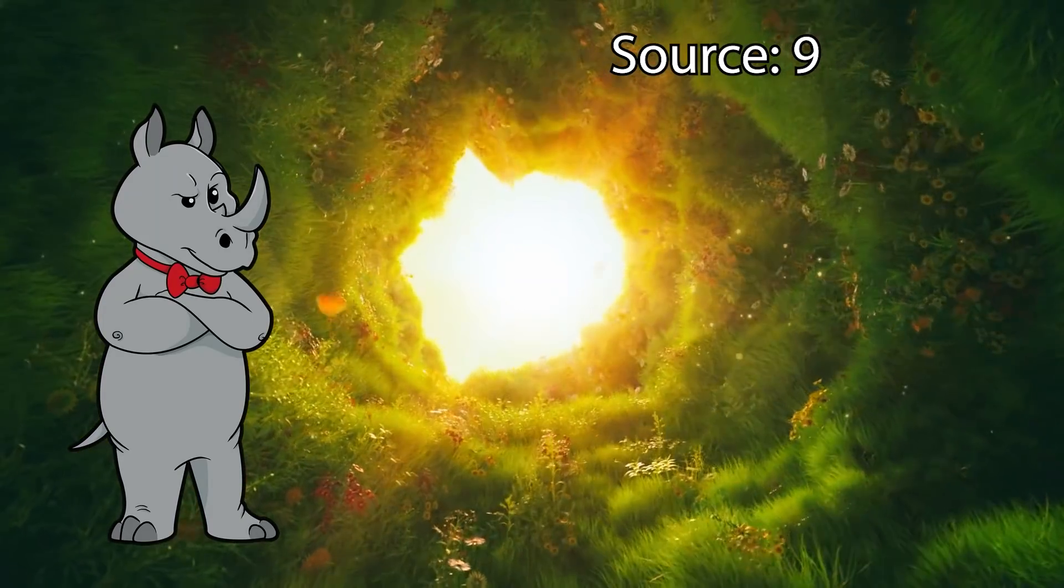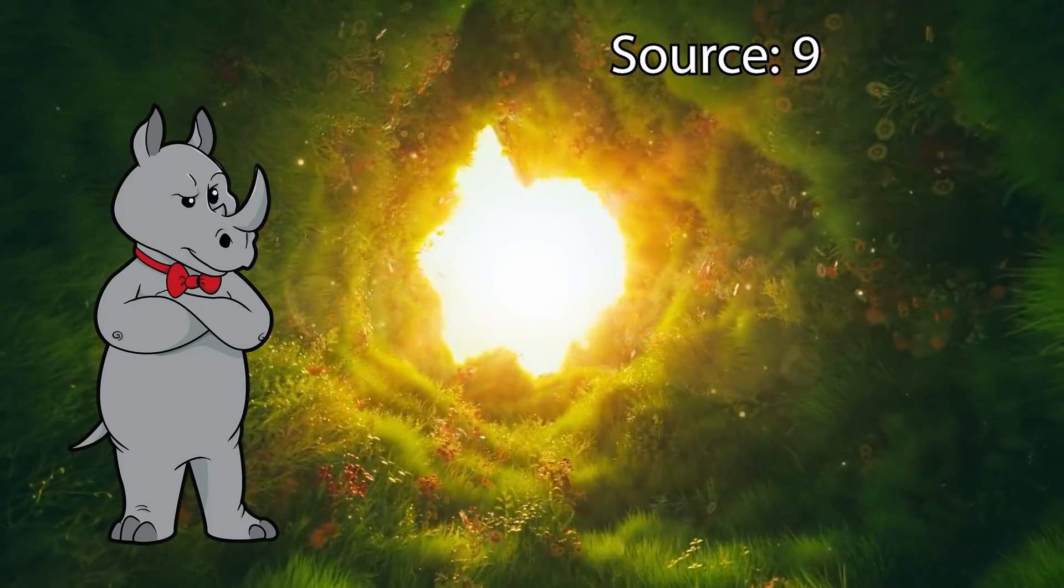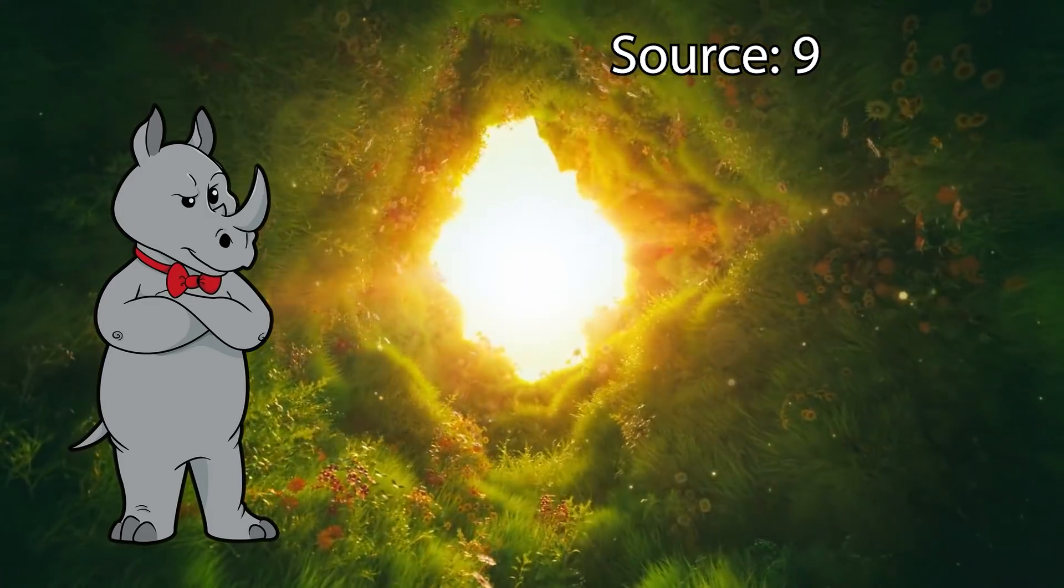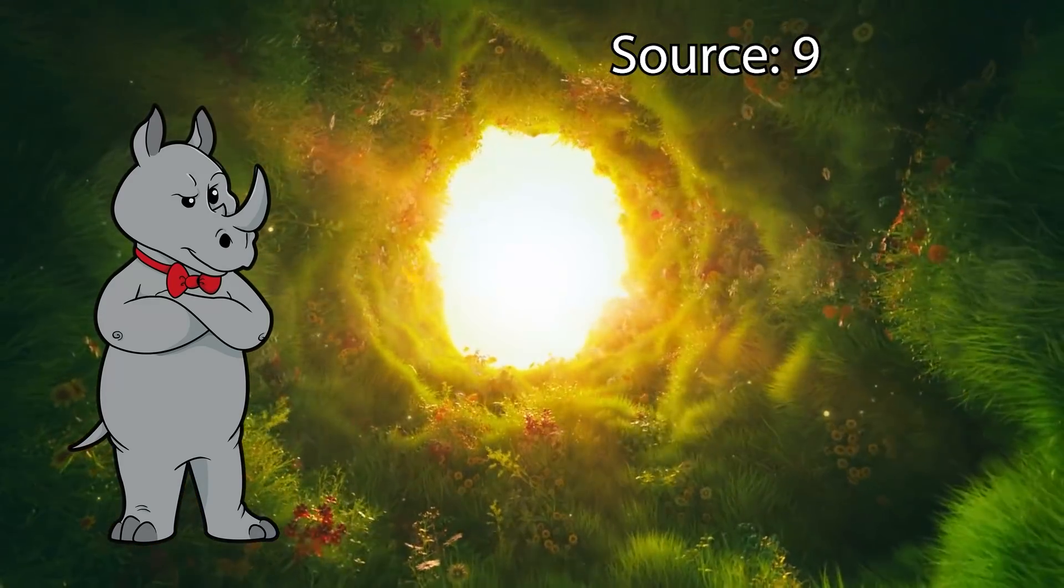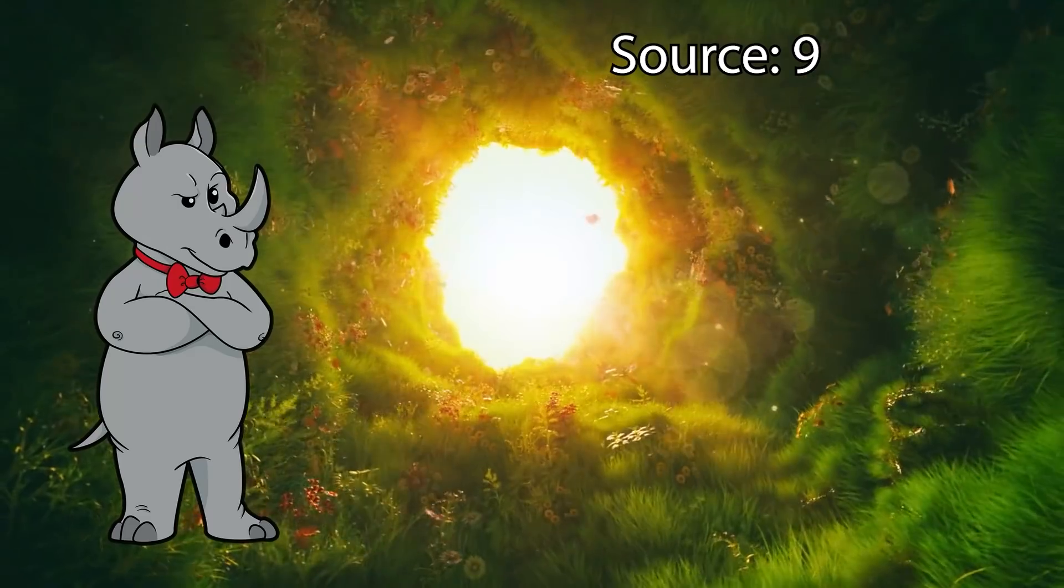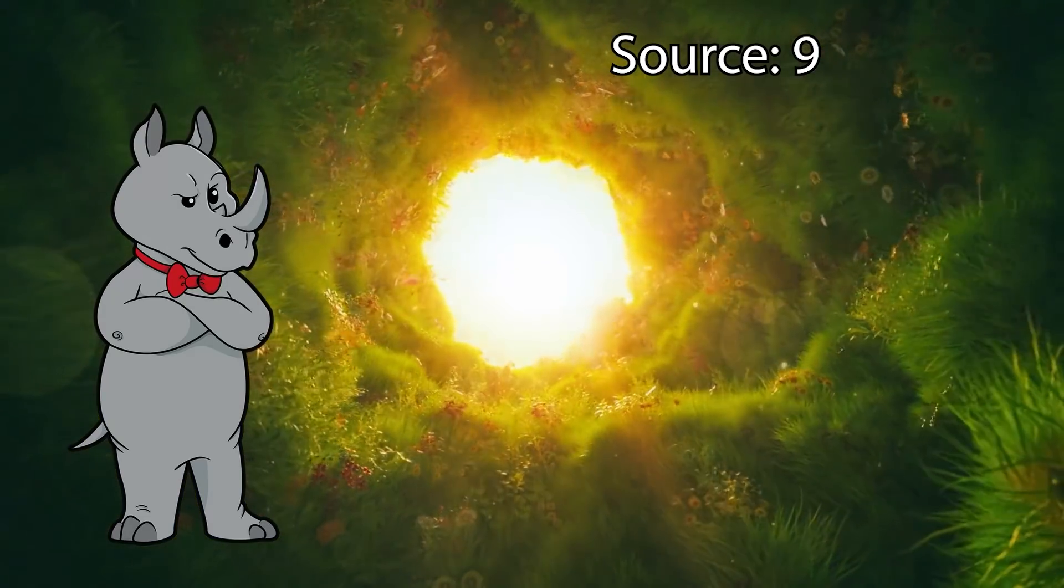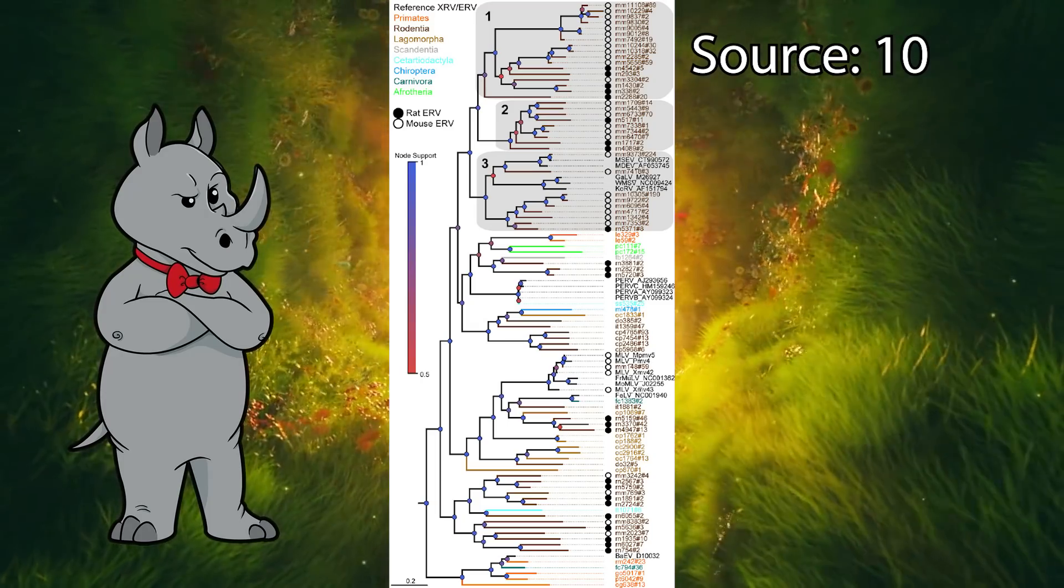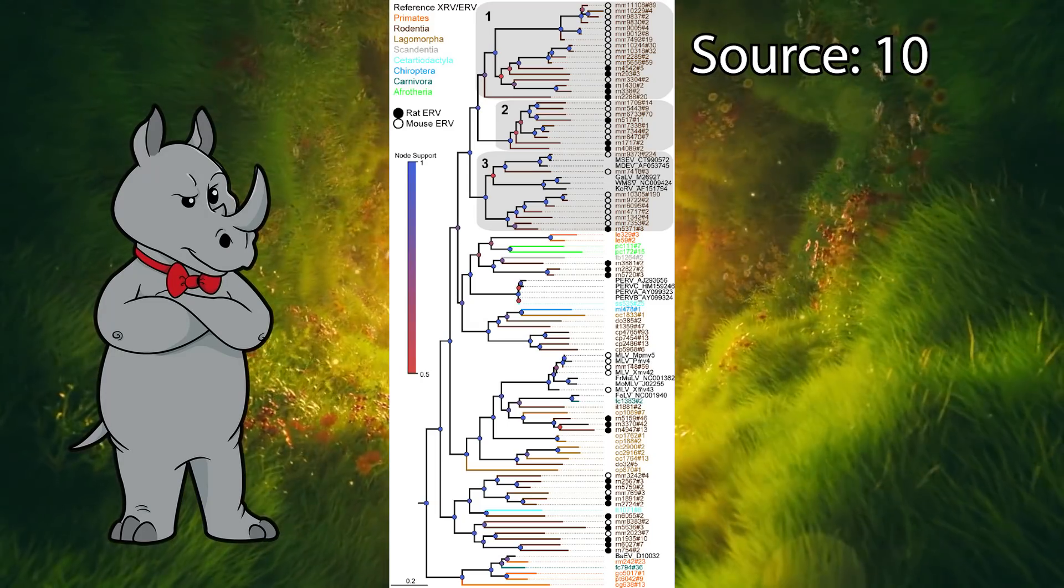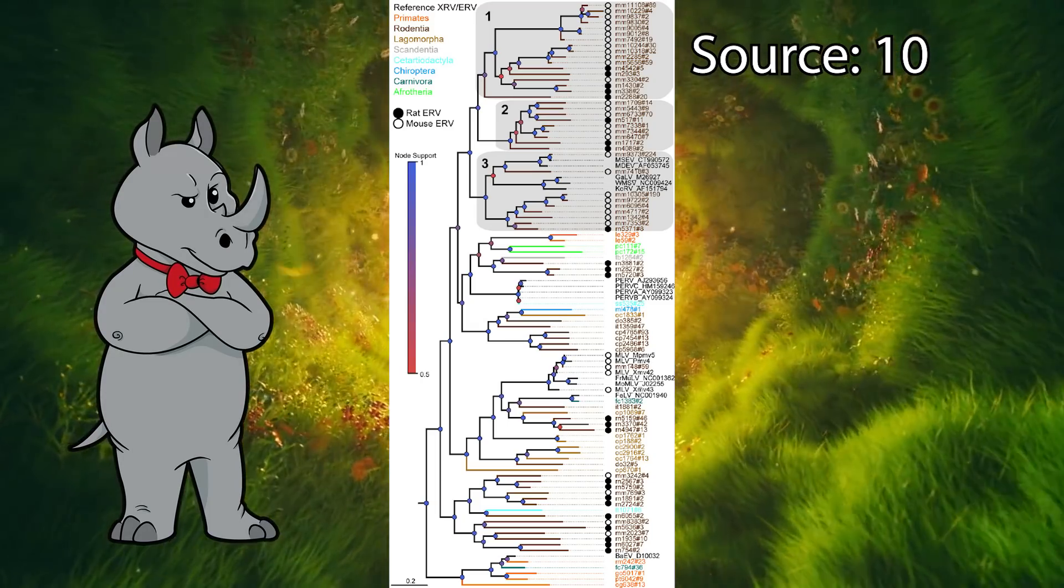This is because it is entirely possible for two independent ERVs to become fixed in a population of the organism at separate times, without there having been a speciation event in between. This is actually why, when constructing genetic phylogenies from any data, the researchers will usually use the name of the gene or the ERV, with some sort of other indicator used on the chart to represent the different taxa.